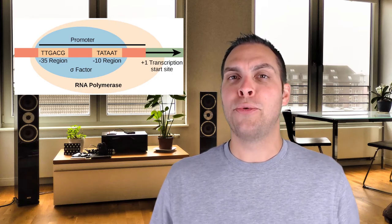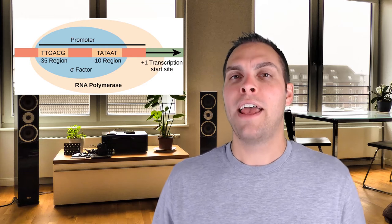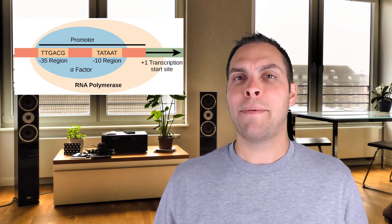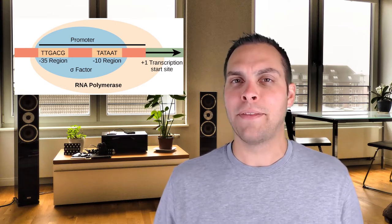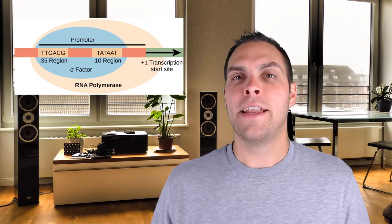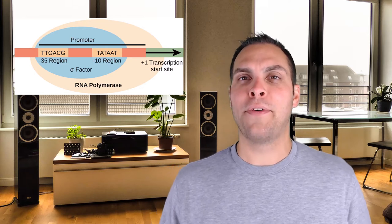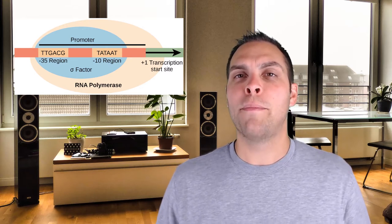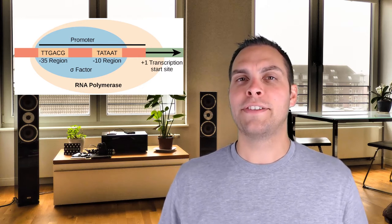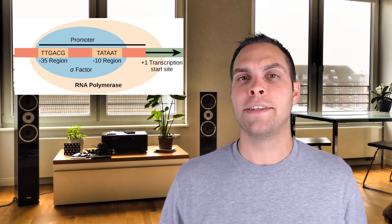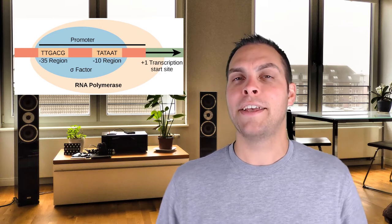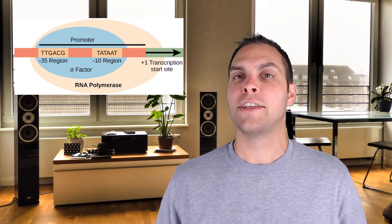Just downstream of the minus-35 sequence, between it and the start of the gene, is what we call the minus-10 TATA box. The TATA box gets its name because it consists mainly of T and A nucleotides. The numbers minus-35 and minus-10 reference how far upstream of the gene they lie — the minus-35 consensus sequence is 35 nucleotides upstream of the gene, and the TATA box is 10 nucleotides upstream.